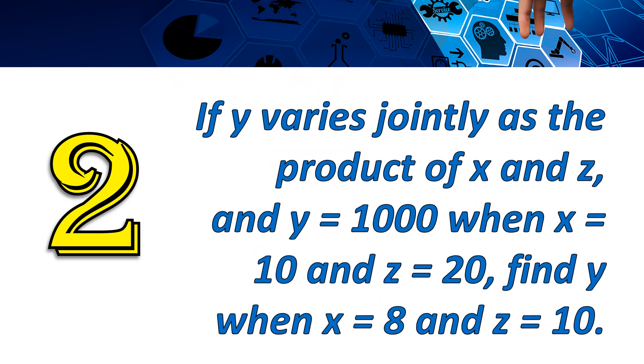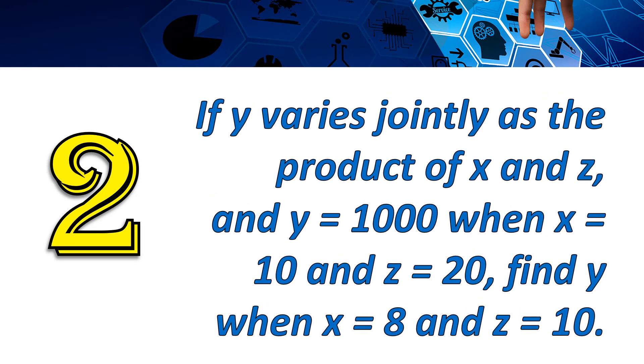For our second example, if y varies jointly as the product of x and z, and y equals 1000 when x equals 10 and z equals 20, find y when x equals 8 and z equals 10. Again, we will follow the three-step procedure.